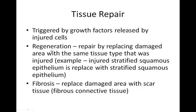Regeneration is when you regenerate the area with the same type of tissue. For example, if you injure the stratified squamous epithelium, it's going to replace itself with stratified squamous epithelium — totally repairing itself. In fibrosis, you replace the damaged area with a totally different type of tissue. For instance, we would replace heart tissue with scar tissue, replacing cardiac muscle with fibrous connective tissue, which is a totally different tissue type.